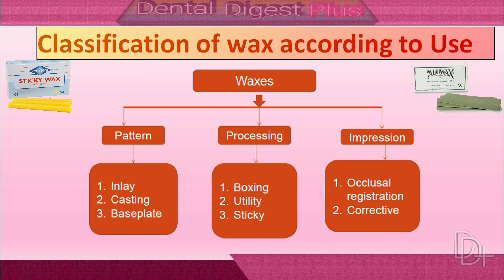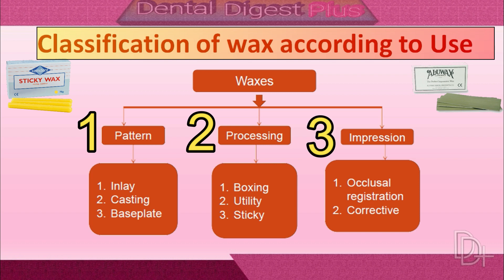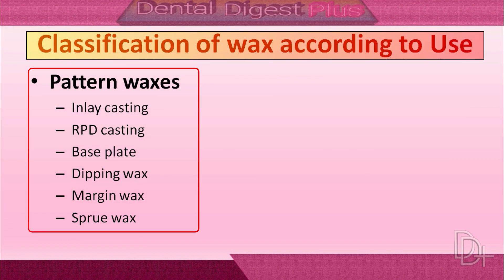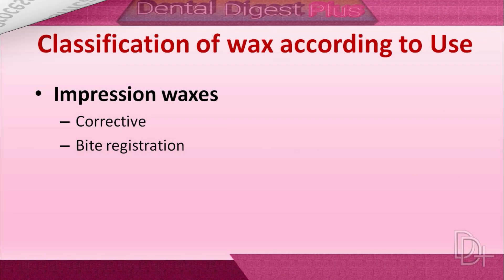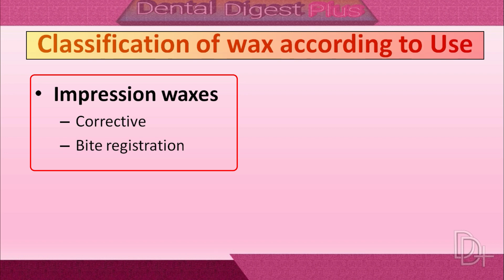Now let's see the other classification, which is classification of dental wax according to use. This is a widely used classification. According to use, dental wax is classified into: first, pattern wax; second, processing wax; and third, impression wax. In the second slide you can see the processing wax, and in the third slide these are the impression waxes.